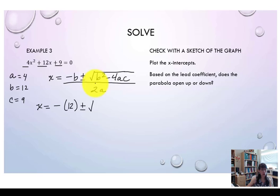Plus or minus the square root of b squared. That means 12 squared minus 4 times a, which is 4, times c, which is 9, all divided by 2 times a. So that's 2 times 4.